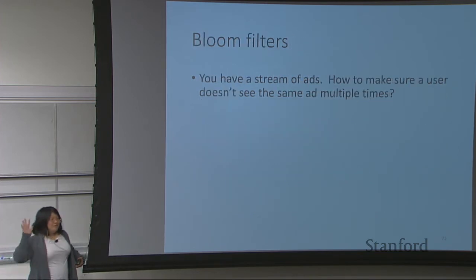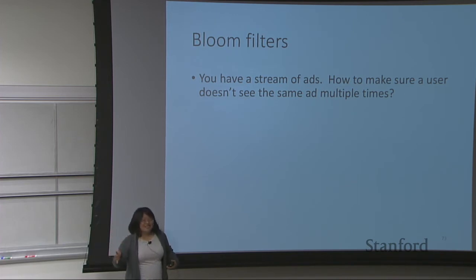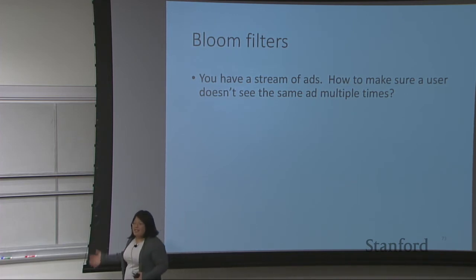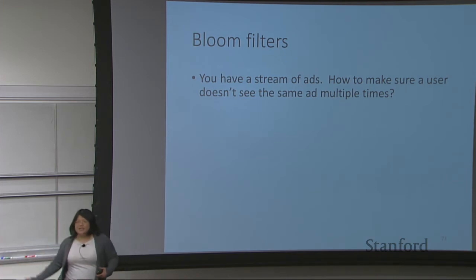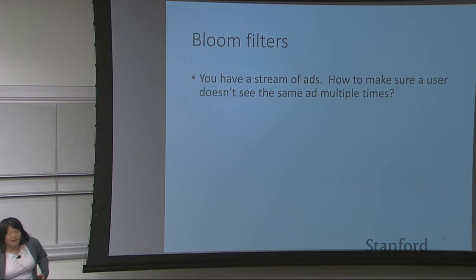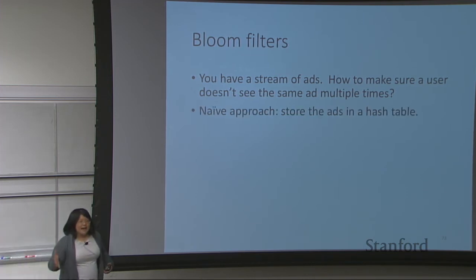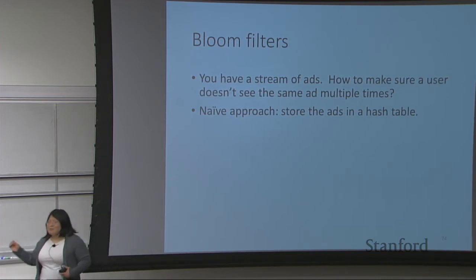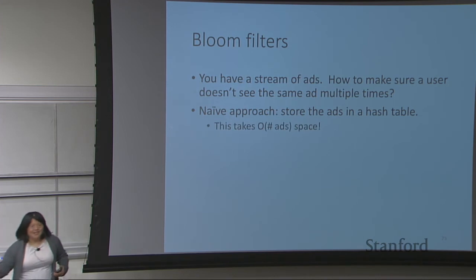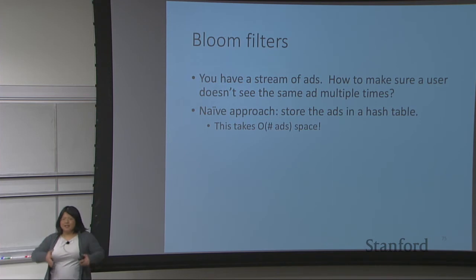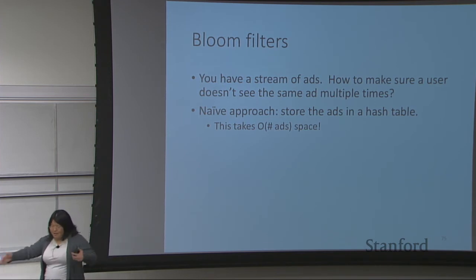And what are bloom filters? The idea with bloom filters is you have a long stream of elements and you want to see if there are any duplicates. Let's say you have a stream of ads and you want to make sure a user does not see the same ad multiple times. The naïve way is to store all the ads in a hash table. Unfortunately, this takes almost as much space as there are ads, because you'd just stuff every ad into the hash set and it would grow bigger and bigger until it explodes.